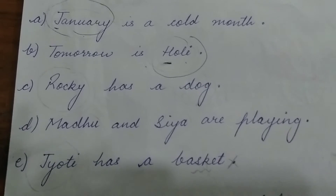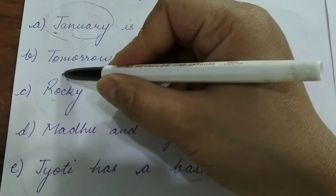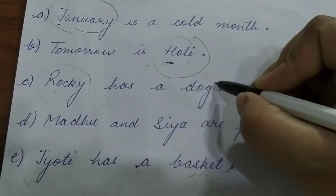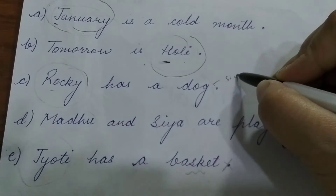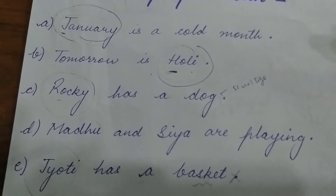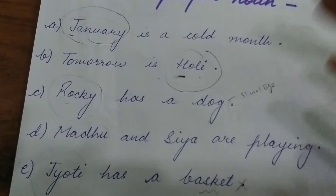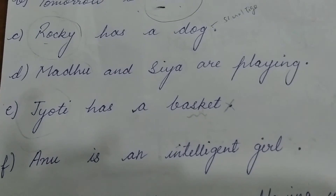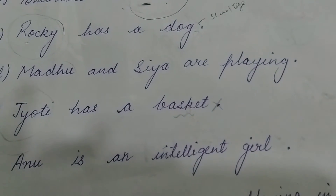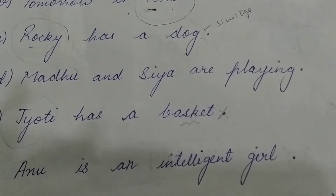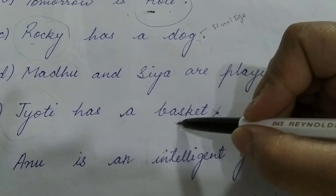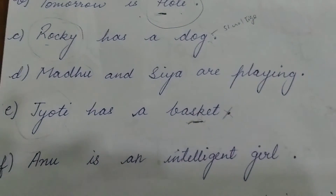'Rocky has a dog.' Rocky is the name of a boy — we will circle this. Dog is common noun because there are so many dogs; if instead there were a name like Sheru or Tiger, then we would circle it. 'Madhu and Sia are playing.' Madhu and Sia are proper nouns. 'Jyoti has a basket.' Jyoti is the name of a girl — proper noun. Basket is a common noun; it is a general name.